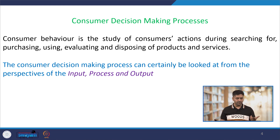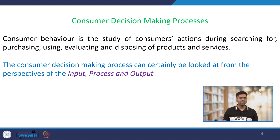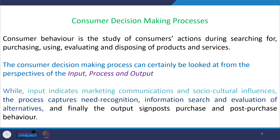In general, the consumer decision making process can be looked at from the perspectives of input, process, and output. Input is about where they are getting information from — it can be through the marketer, how they execute the 4Ps, through advertising campaigns or marketing communications, or from socio-cultural influences such as how culture impacts product choices, social factors, how family influences them, or opinion leaders and reference groups.